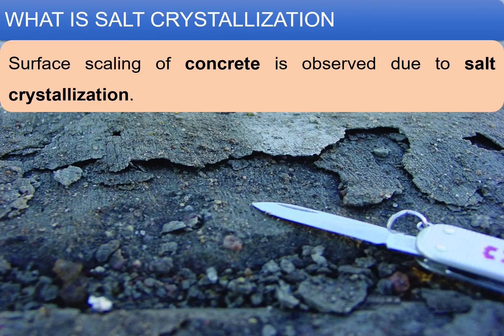Salt crystallization is a process in concrete which is affected because of the presence of salt inside the concrete. Because of the presence of salt, surface scaling of concrete is observed due to the crystallization process. In the process of crystallization, the change in volume takes place which exerts a pressure on top of the concrete, and this pressure is large enough to develop surface scaling on top of the concrete.